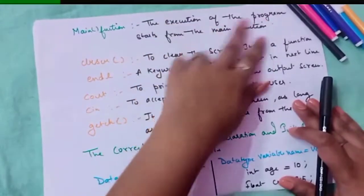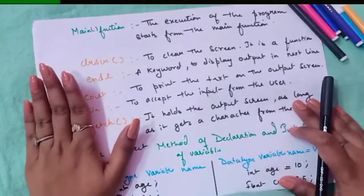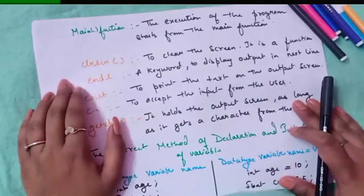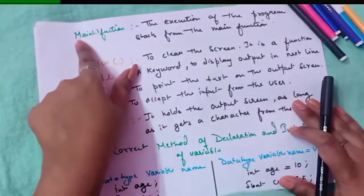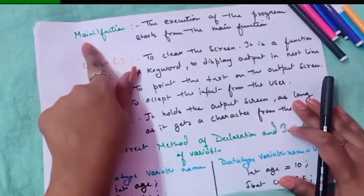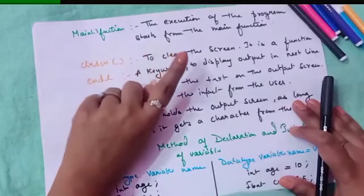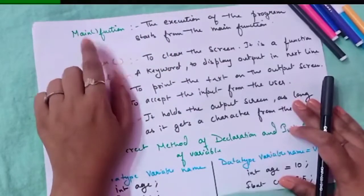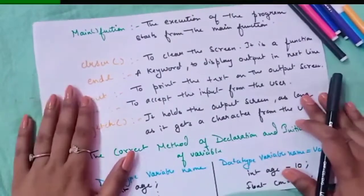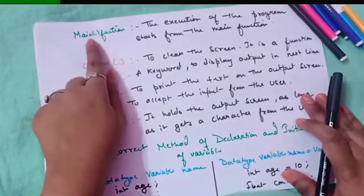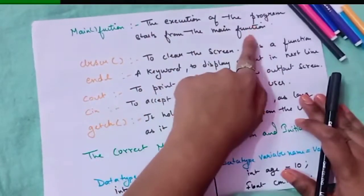Now what is the main function? The execution of the program starts from the main function. In every program there must be a point from where execution starts. The compiler always searches for the main function. If it does not find a main function, execution will not start and you will get an error. Including the main function is mandatory.